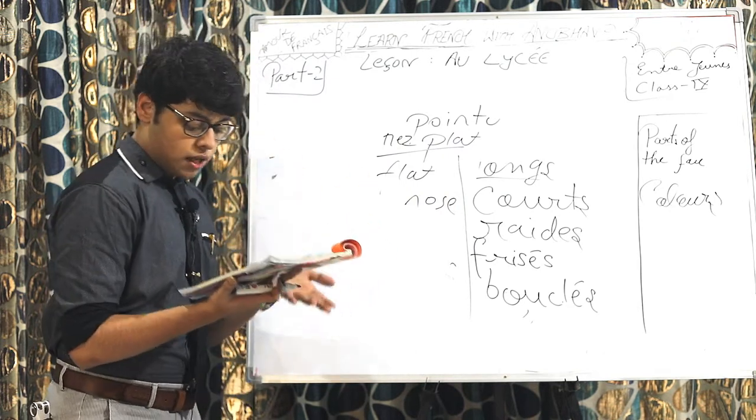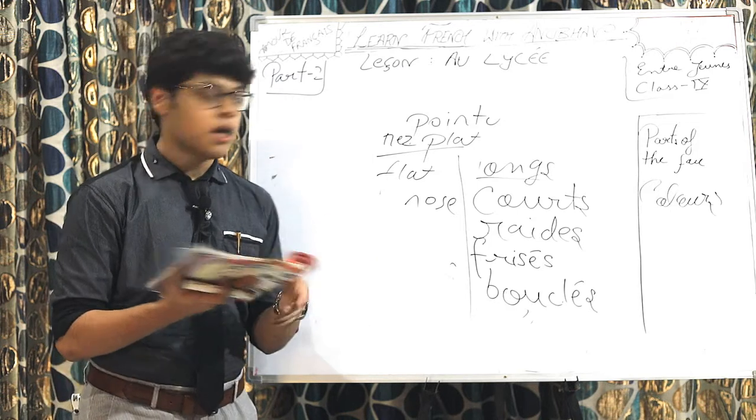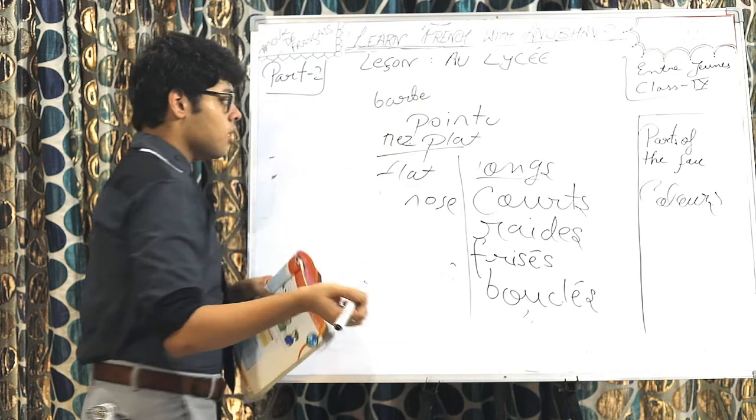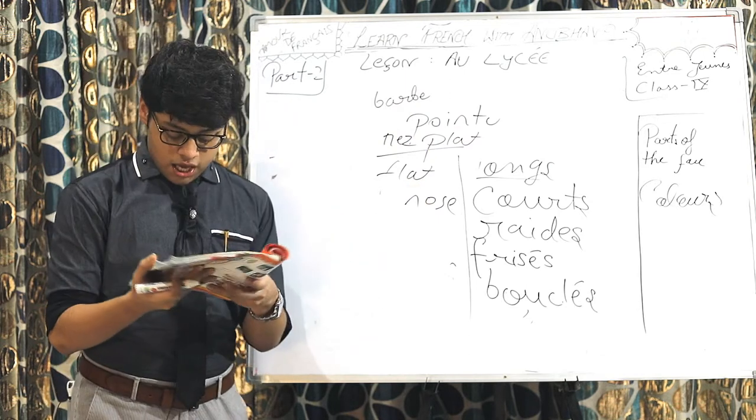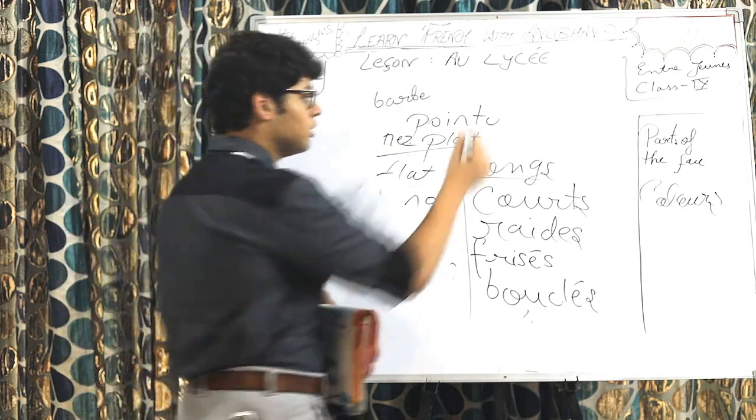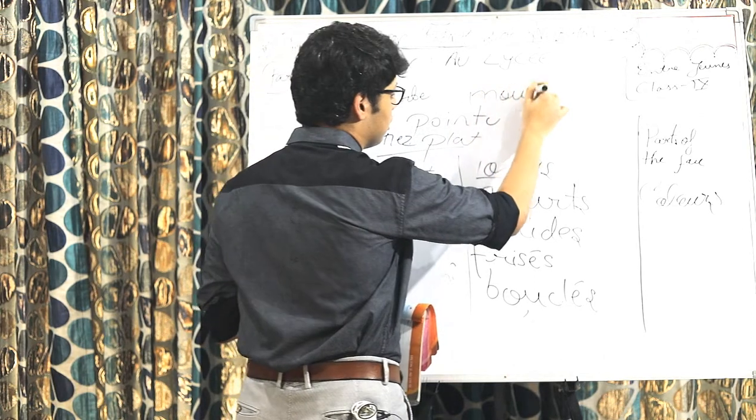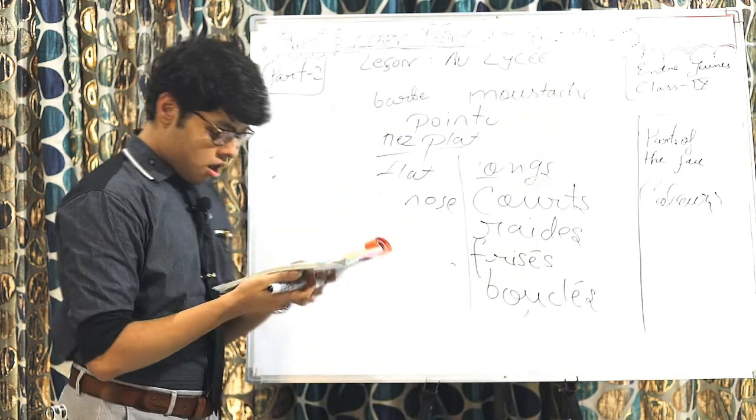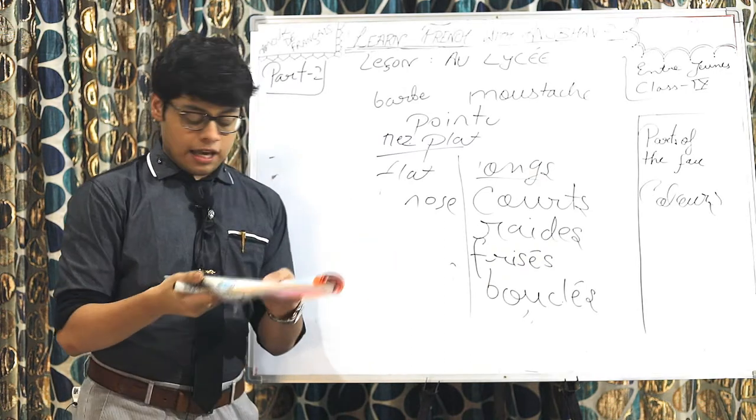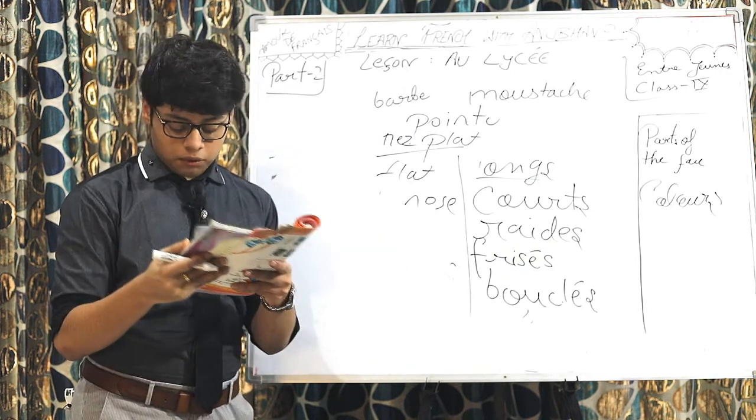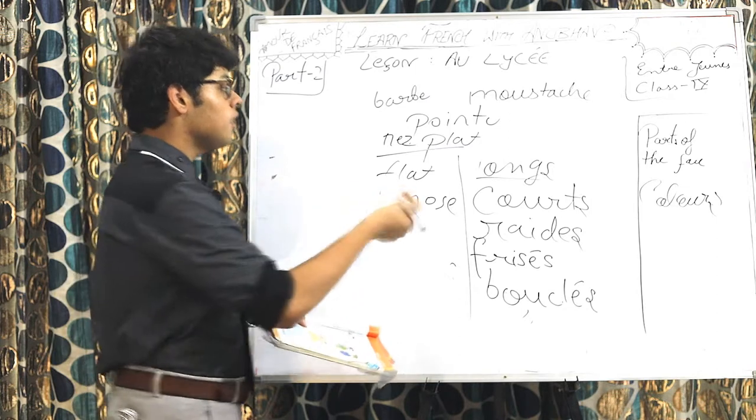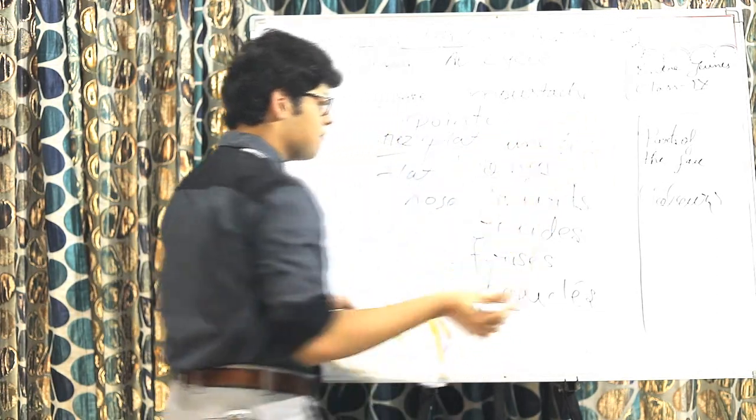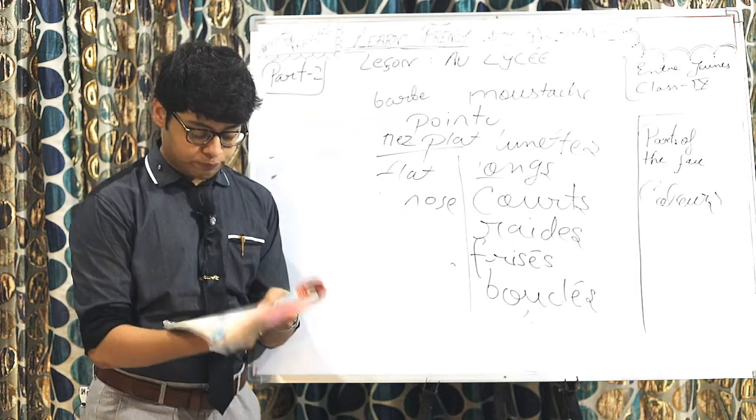Next point could be il, a, yun, barb. Barb is beard. Or, yun, moustache. Moustache. And, lastly, il or el, port de lunette. Lunette, spectacles or glasses. Whether he or she wears spectacles or glasses. Now, moving towards page number 20.